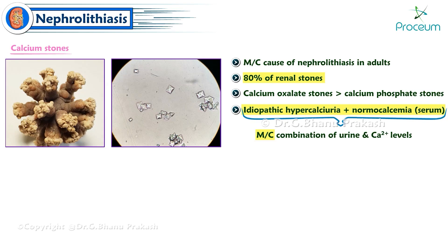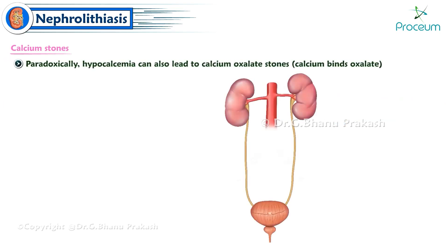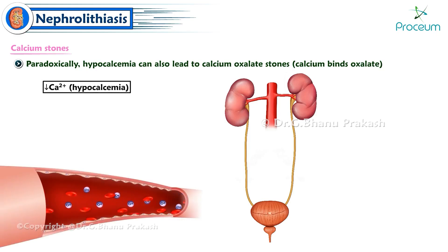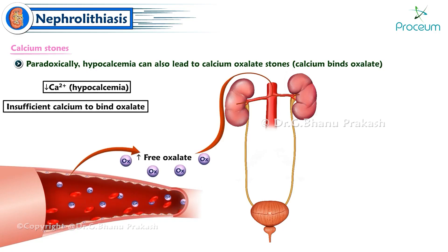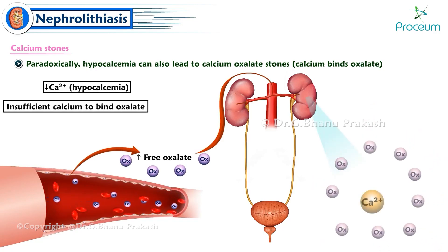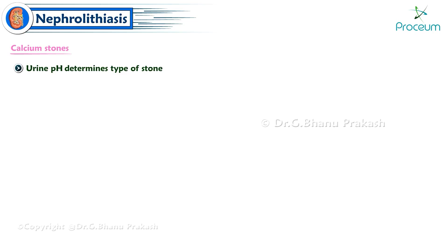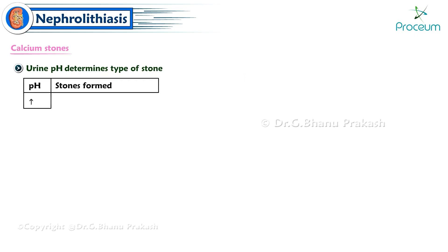Paradoxically, hypocalcemia can also lead to calcium oxalate stones because calcium normally binds oxalate. In low calcium states, there is insufficient calcium to bind oxalate, allowing increased free oxalate to precipitate and form stones. The type of calcium-containing kidney stone formed depends on urine pH.